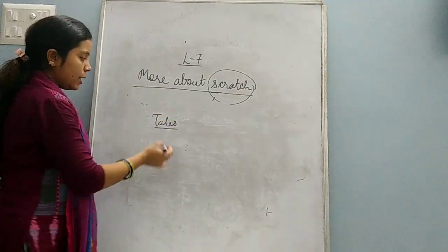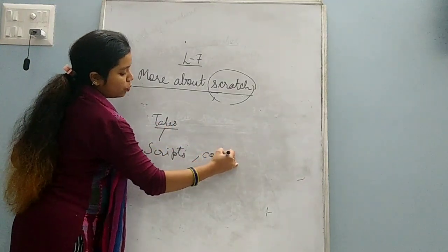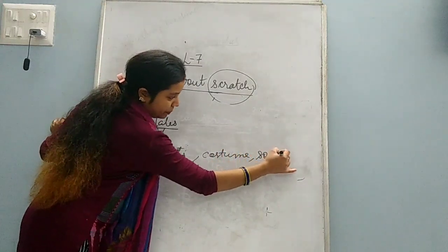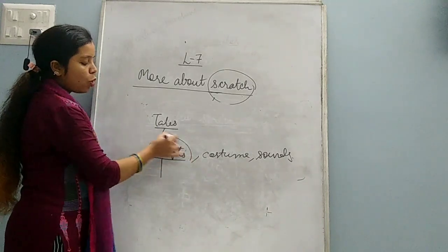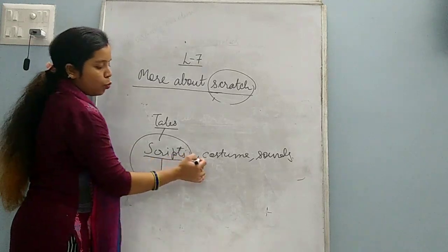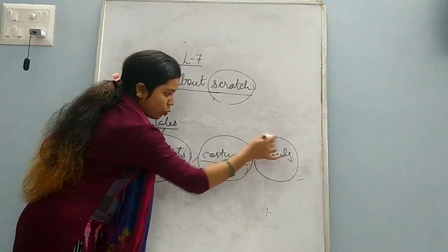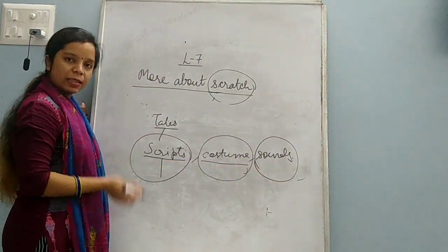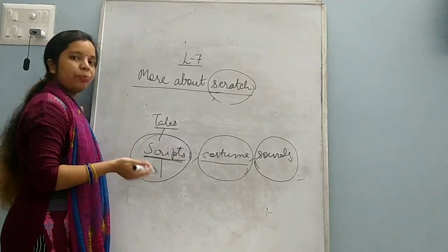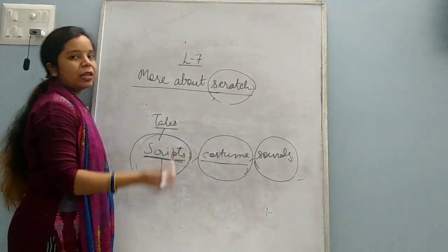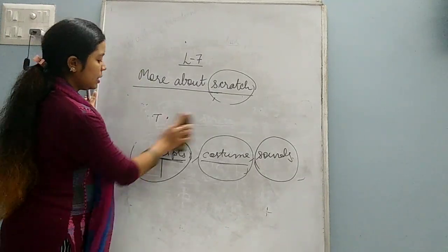In scratch there are three kinds of tabs. One is script tab, one is costume tab, and one is sound tab. When you will click on script tab, this will show all the options related to script. When you will click on costume tab, this will show the options of costume. And when we click on sound tab, this will show the options of sounds. These three kinds of tabs are there in scratch.